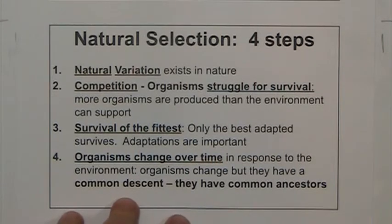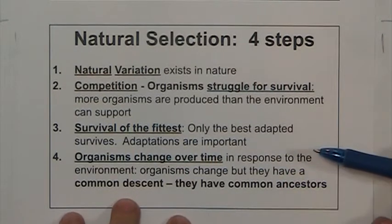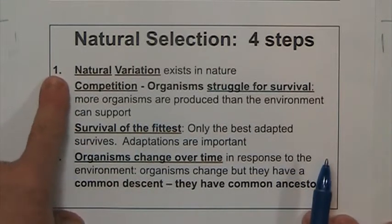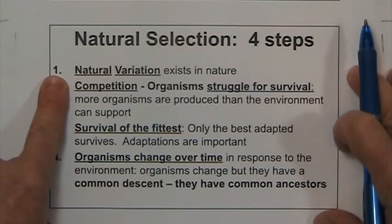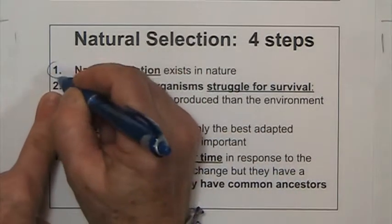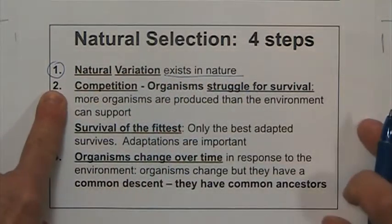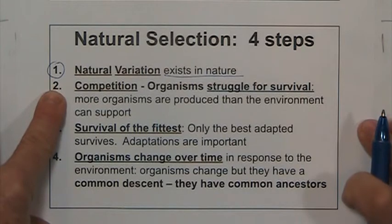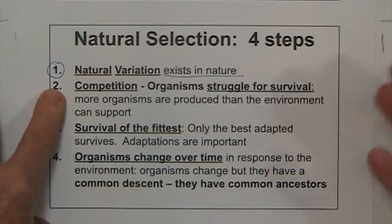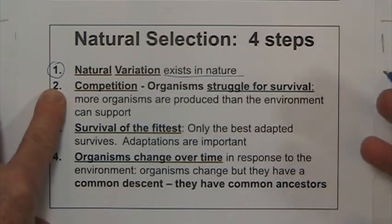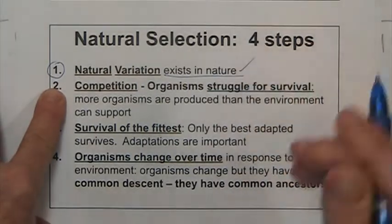Here are the four steps that you need for natural selection to occur. Number one, and the most important — because it's the foundation — you have to have natural variation, variation in your populations. That's the basic element: there is variation, that our organisms are different, and even for one particular trait, there can be more than one form of that trait. Think, for example, of any of the traits that we studied in genetics — those traits can have different alleles. Variation exists in nature.